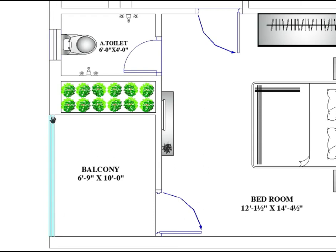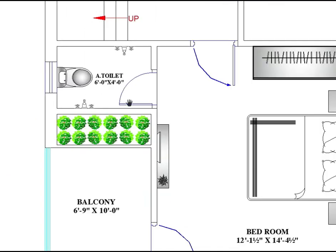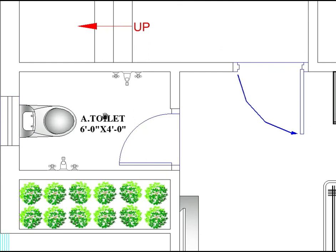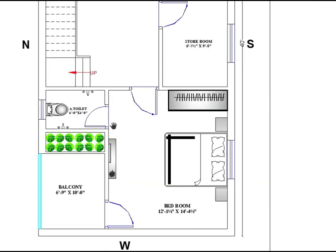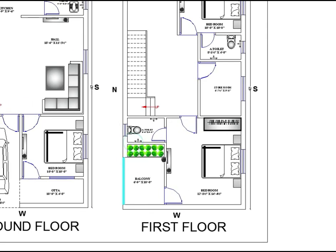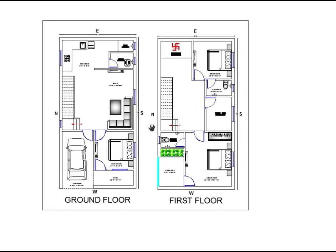Here is the balcony, which is 6 feet 9 inches horizontally by 10 feet vertically. An attached toilet is provided, which is 6 feet by 4 feet — horizontally 6 feet and vertically 4 feet. Ventilation for air circulation is also provided. That completes this 20 by 40 another option house plan.